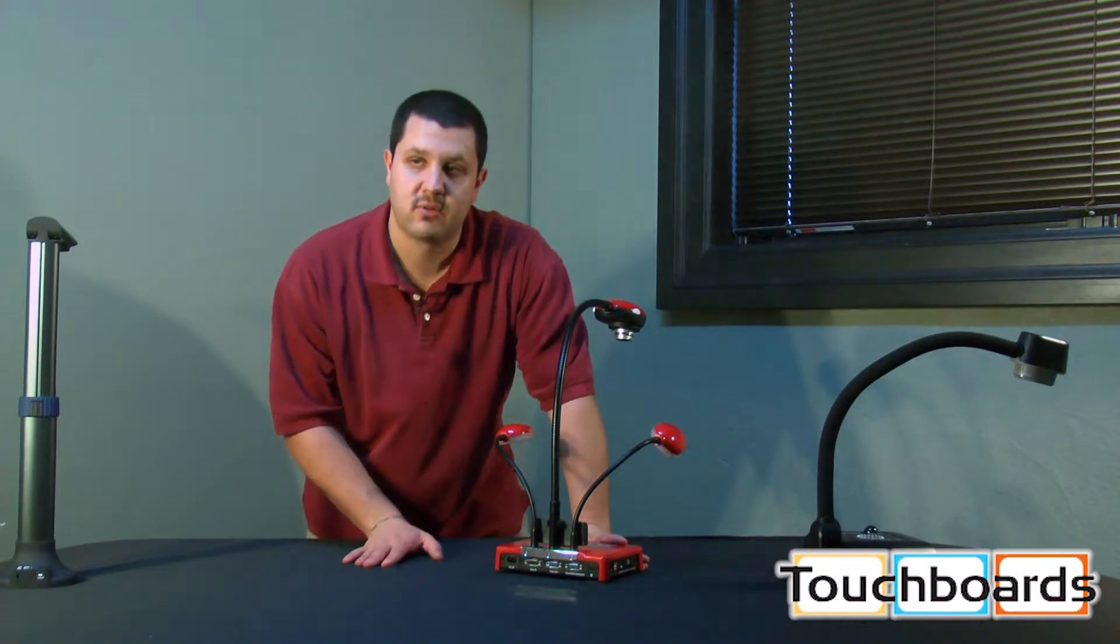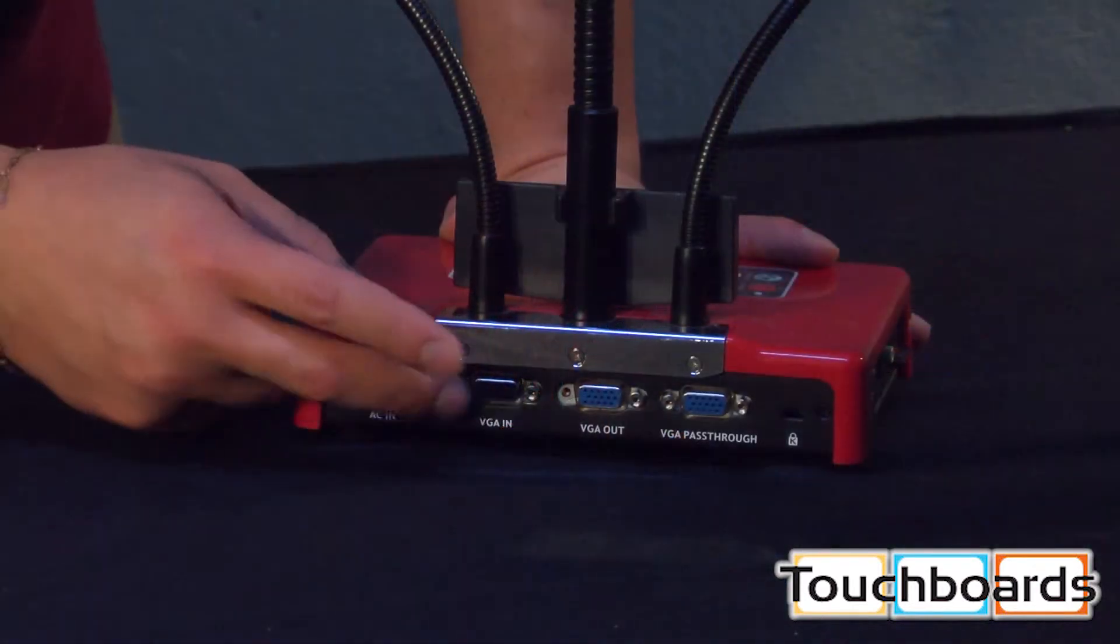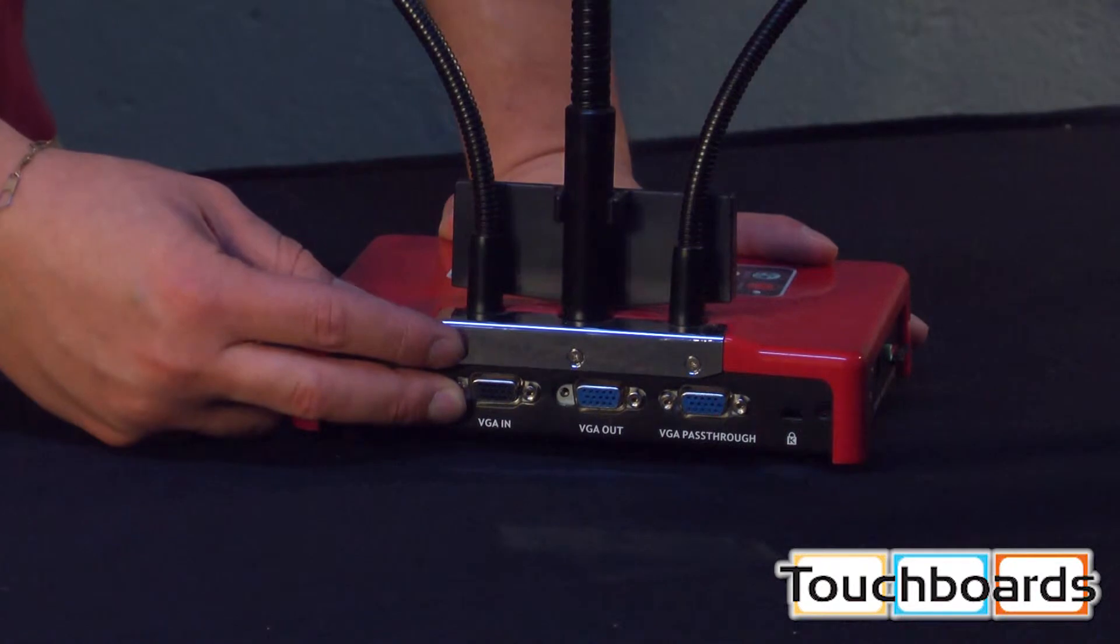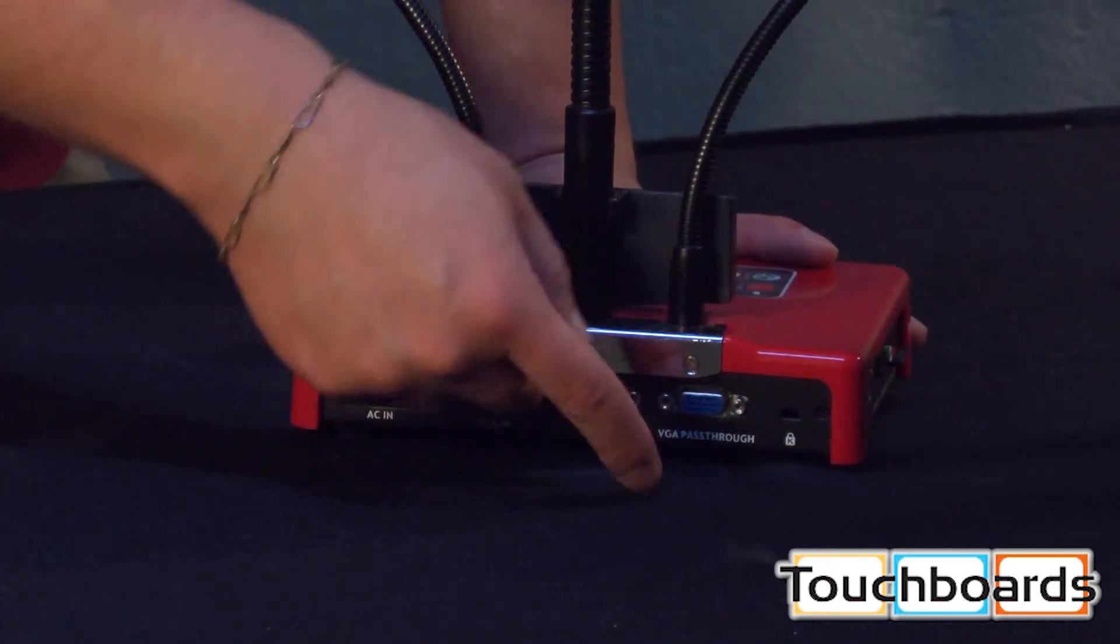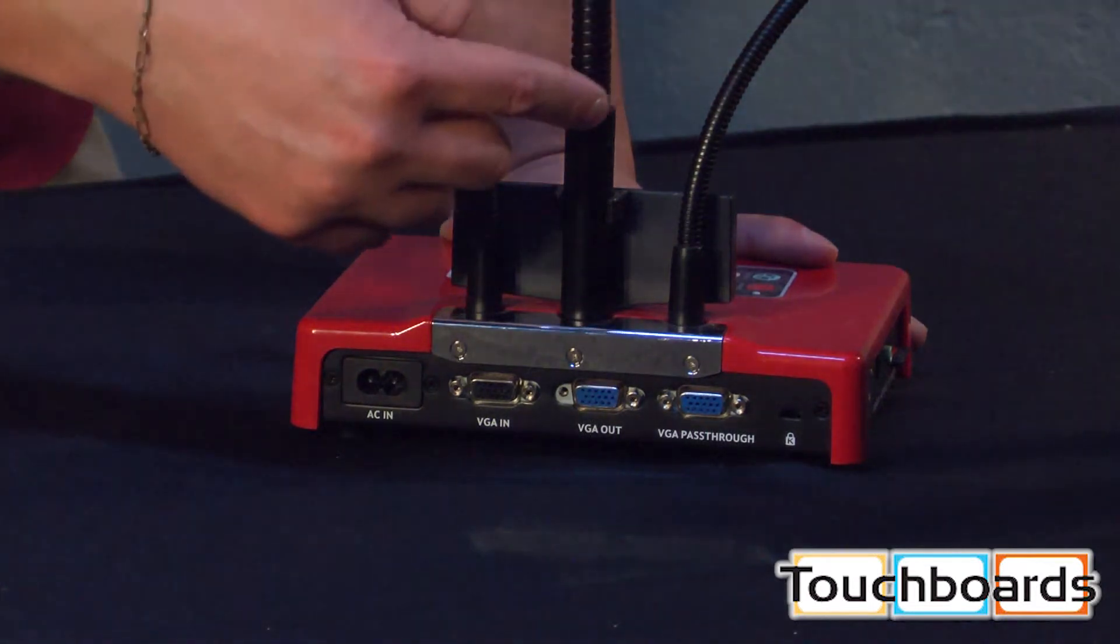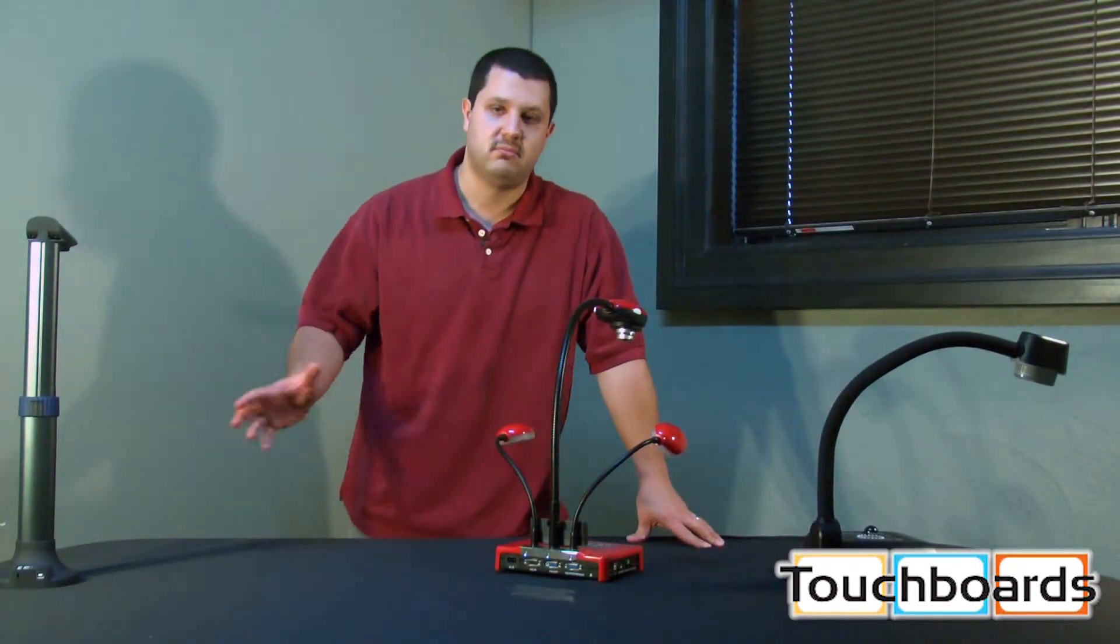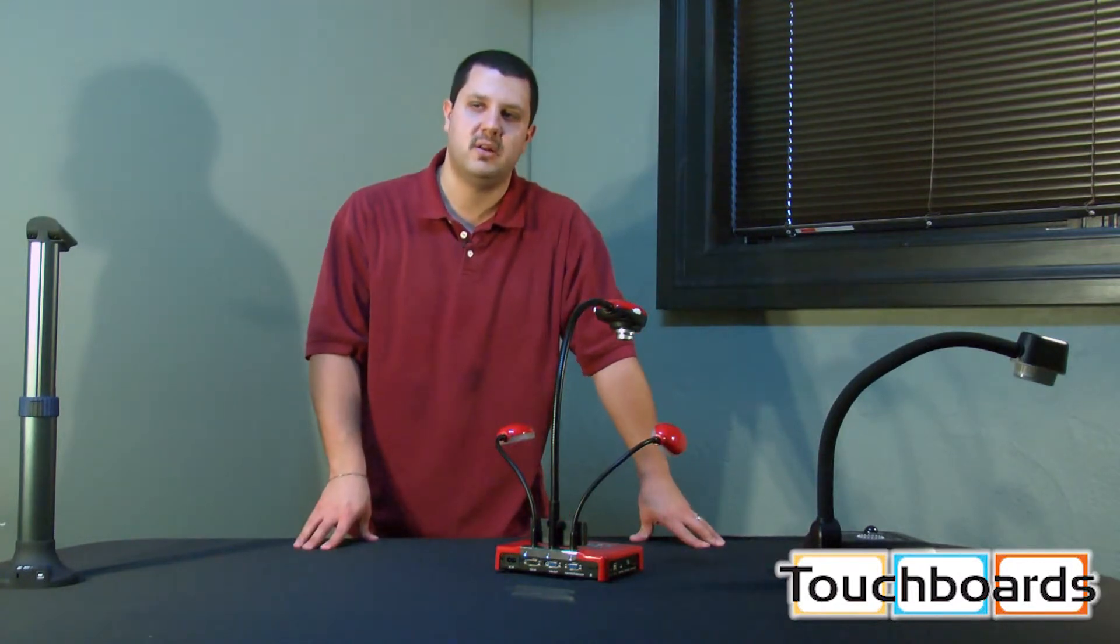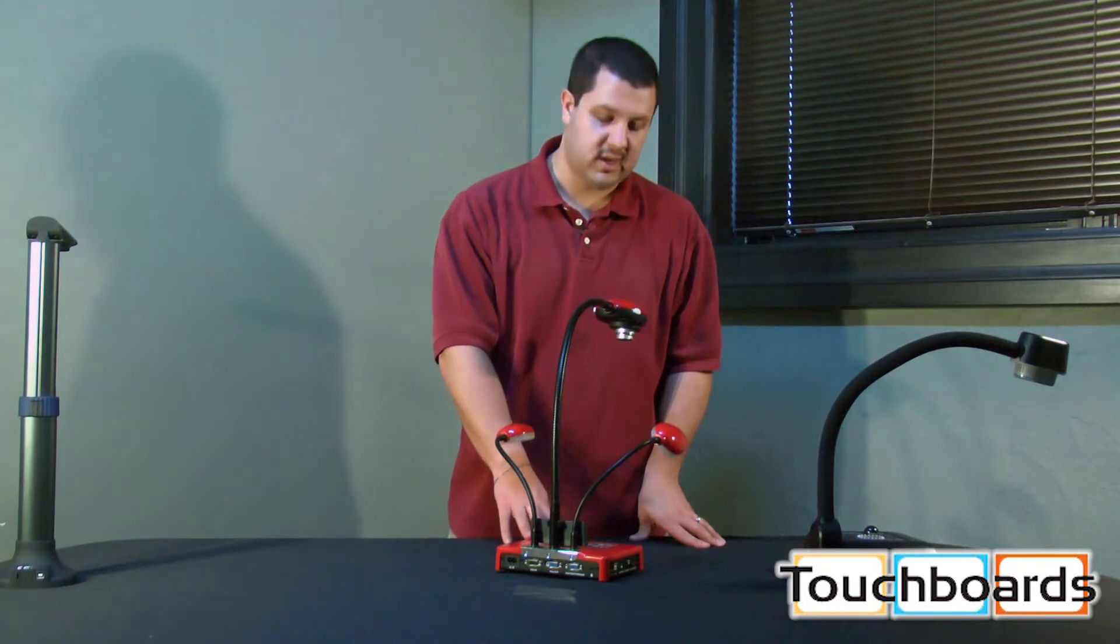So, the way you do that is you're going to run a VGA output from your computer into the input on the projector, and you're going to run another VGA cable from your output or pass-through port and run that up to the input port on your projector. Now, you'll be able to project your computer screen just like you do. You may do that right now. That's not going to change, but when you walk up to your camera, there'll be a button on there.